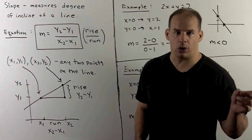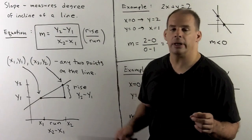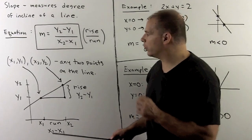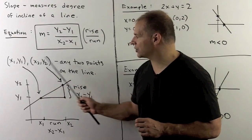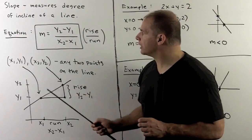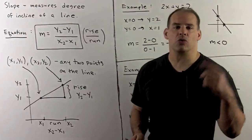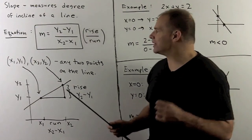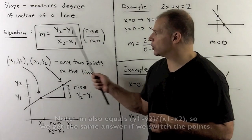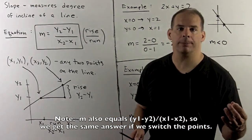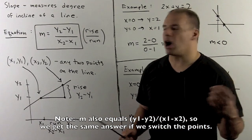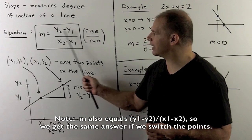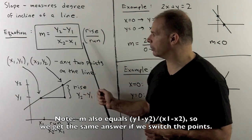If we have two points on the line — any two points, say (x1, y1) and (x2, y2) — slope is defined as the rise over the run. The rise is the change in y: y2 minus y1. The run is the change in x: x2 minus x1. Note the indices line up here.